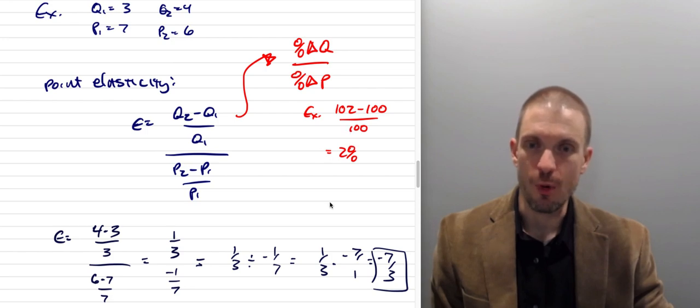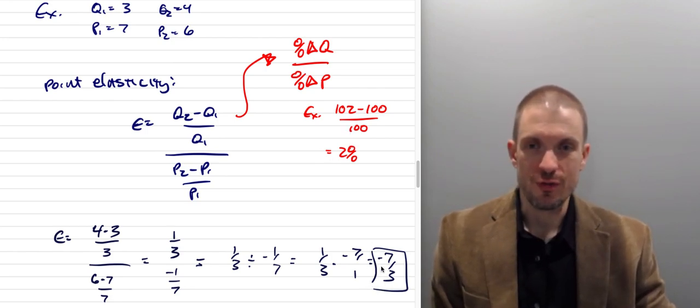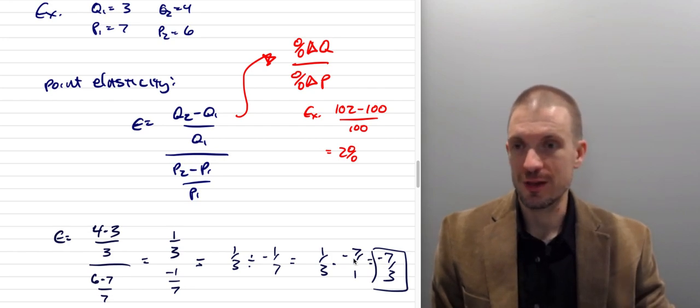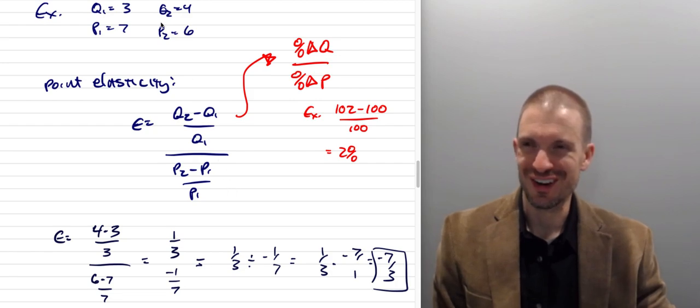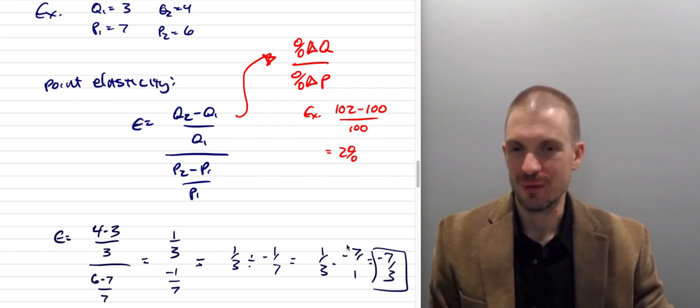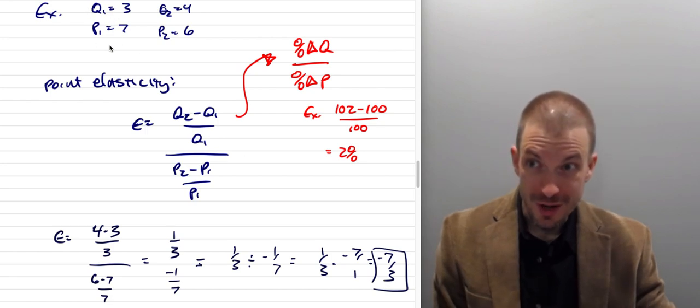Well, specifically at this point, you're going to have an elasticity of minus 7 over 3. The midpoint formula, by contrast, I'll talk about that in the other video, or the video that I'm making in the future, will compute an elasticity halfway between these two points. So anyway, this has computed the elasticity of 7 over 3 at the point 3, 7.